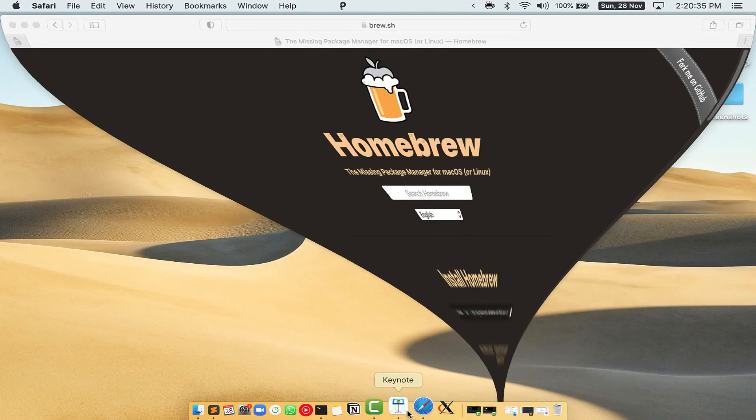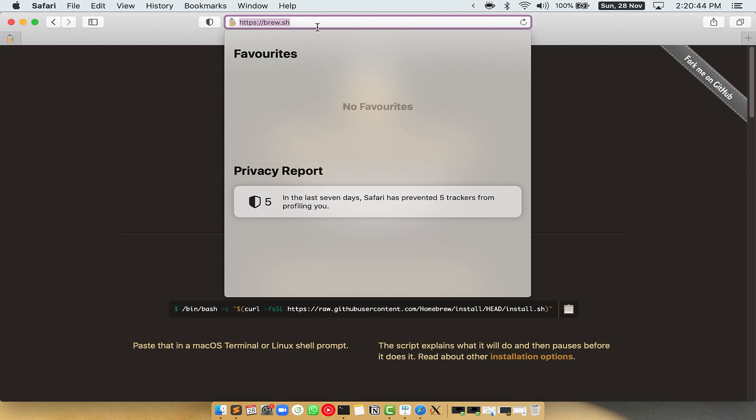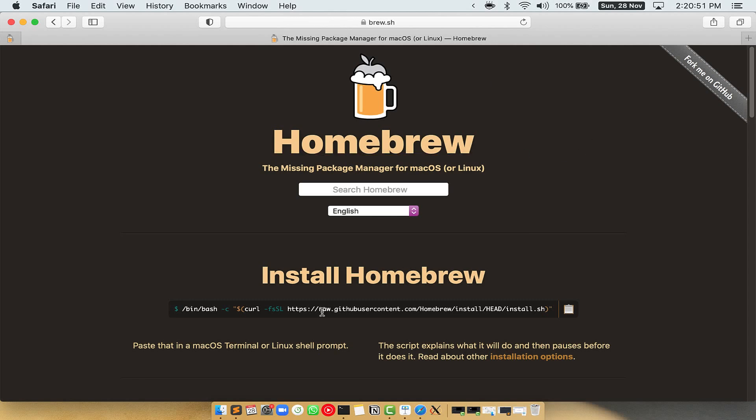Now we need to copy-paste the command to install homebrew from the brew website. So open your web browser and simply go to the website brew.sh. Once you are on the website, you will see this section called Install Homebrew, which has a command that you can simply copy by clicking on this button over here.